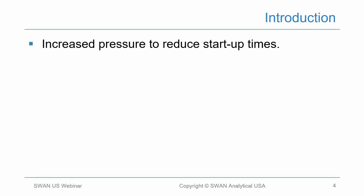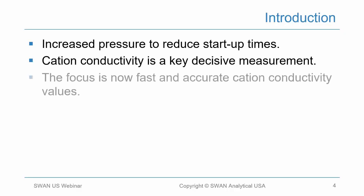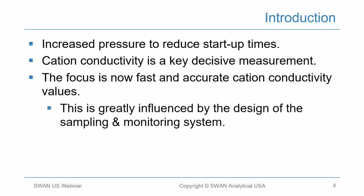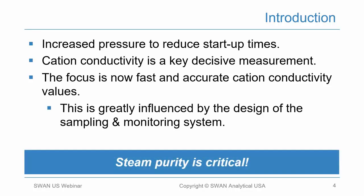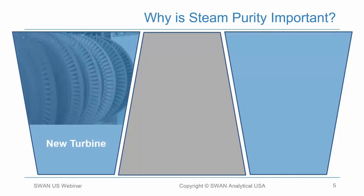In today's power generation environment, with all the renewables, there is tremendous pressure to reduce startup times on our traditional units as well as combined cycles. Cation conductivity is a key decisive measurement parameter for steam purity as well as condensate and feedwater. The focus today is on providing fast, accurate cation conductivity values to facilitate fast startups. The key message is: steam purity is critical to protect the assets.